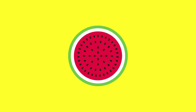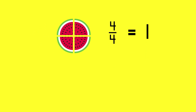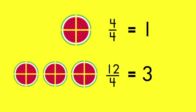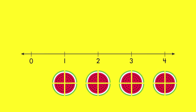You can show whole numbers as fractions. Four parts of four equals one whole. Twelve parts of four equals three wholes. You can also show a whole number as a fraction by writing the whole number as a numerator over a denominator of one.